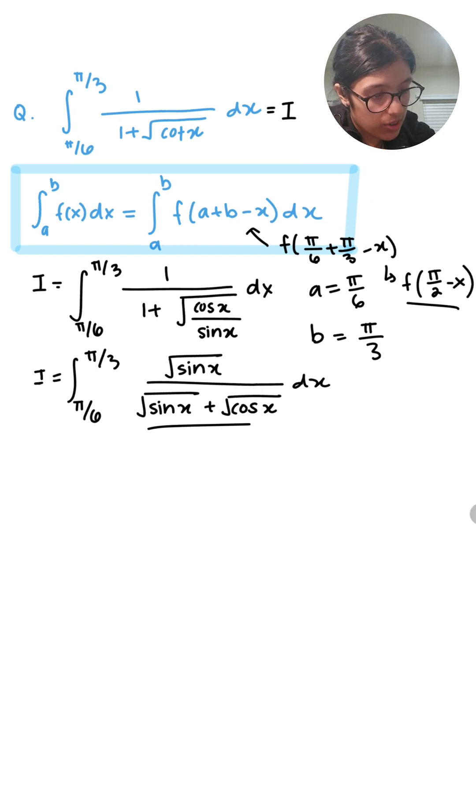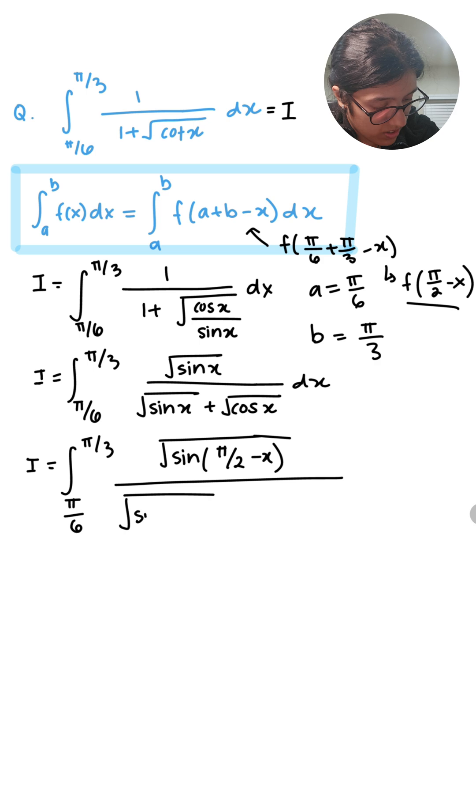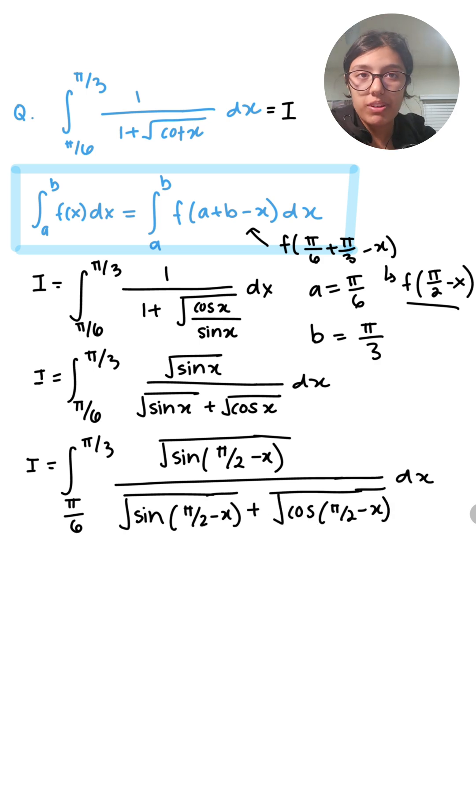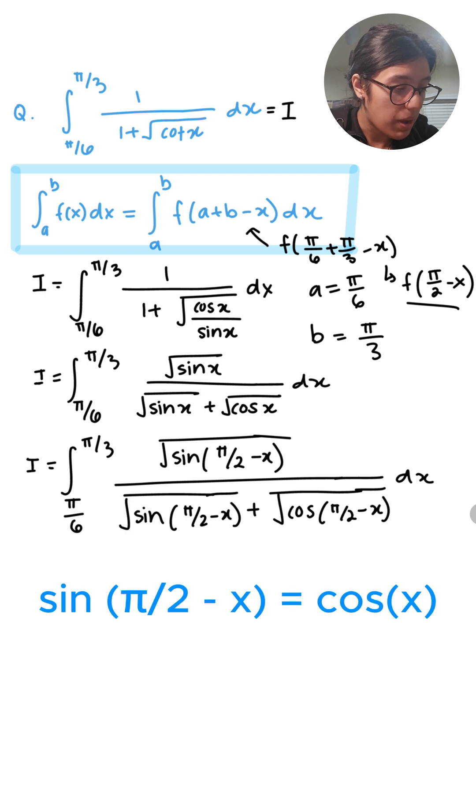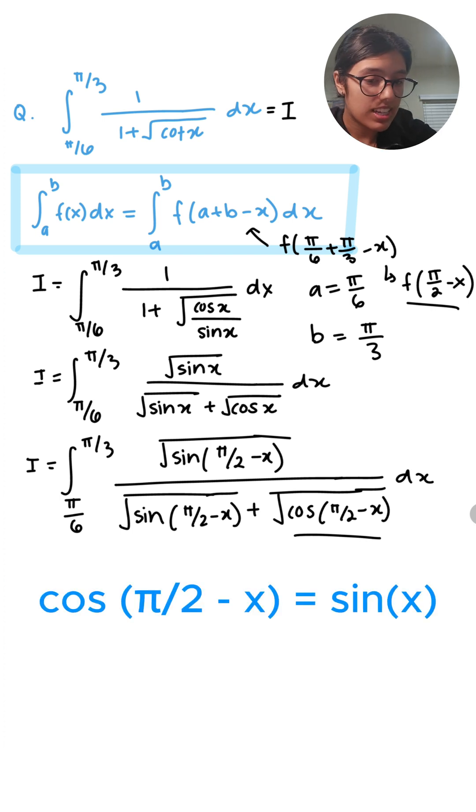I'm going to apply f(π/2 - x) here. Using our knowledge of trigonometric identities, sin(π/2 - x) = cos x, and cos(π/2 - x) = sin x.